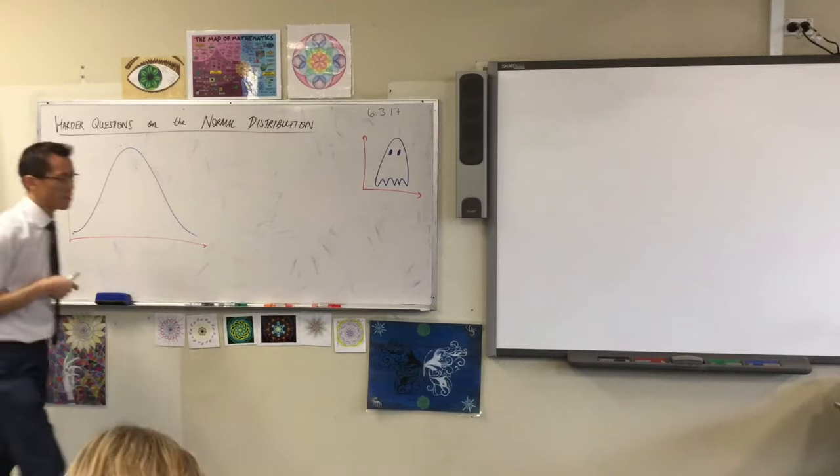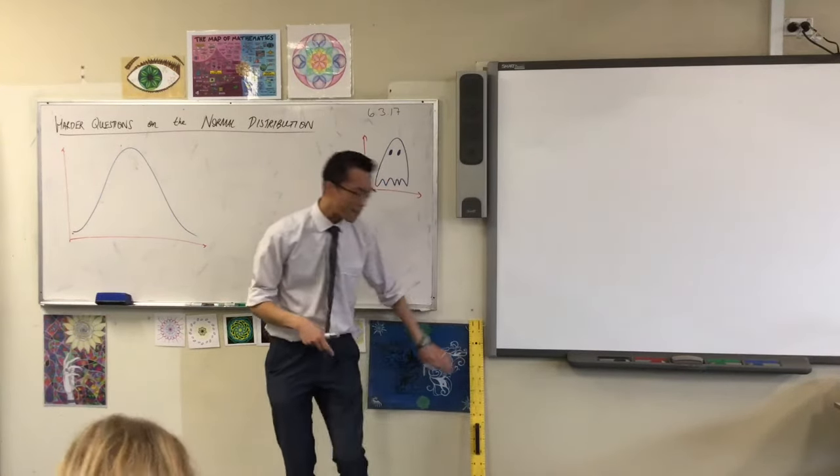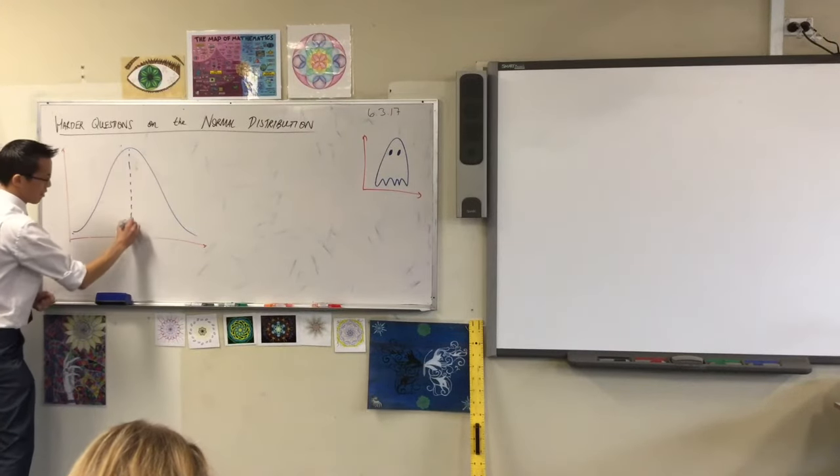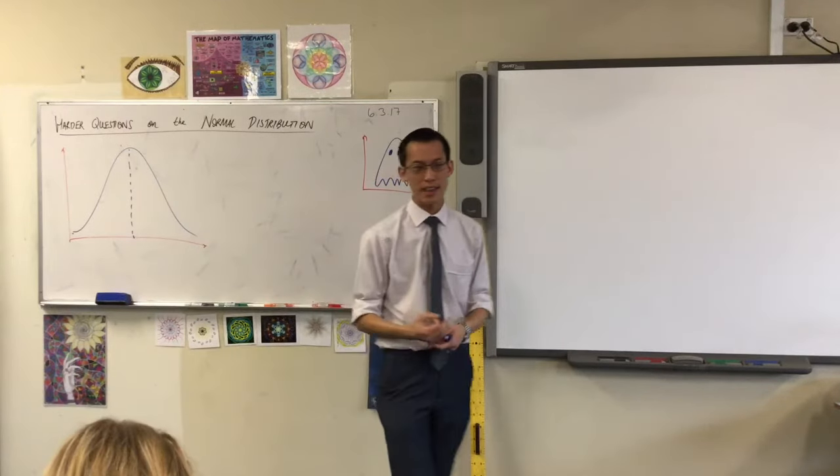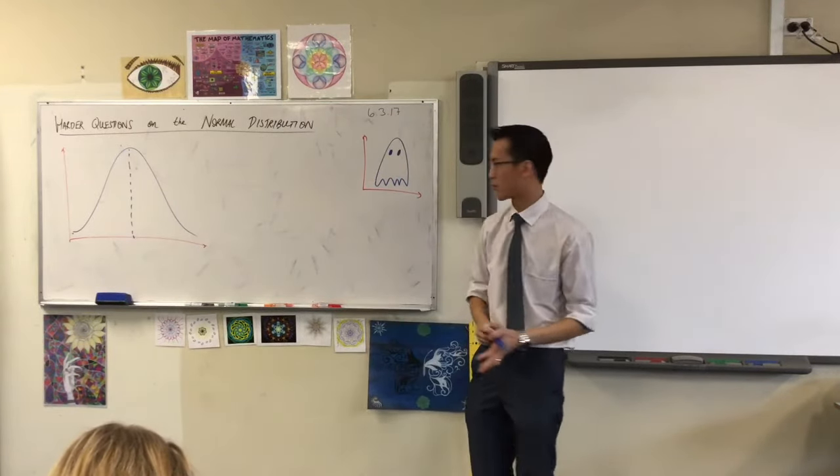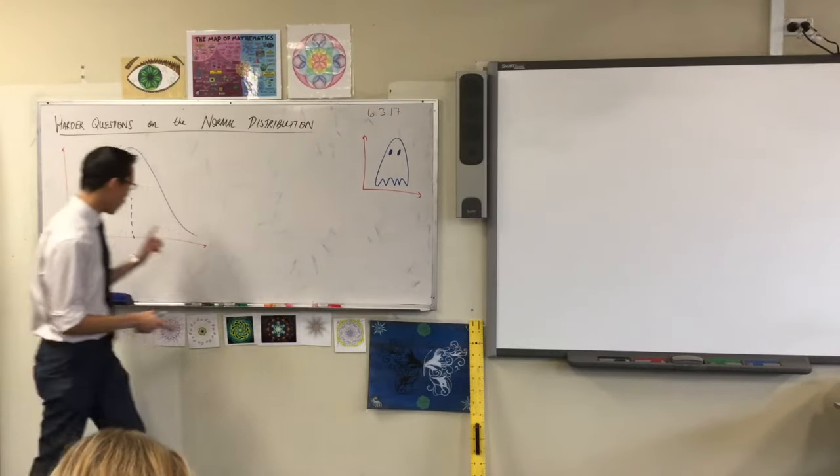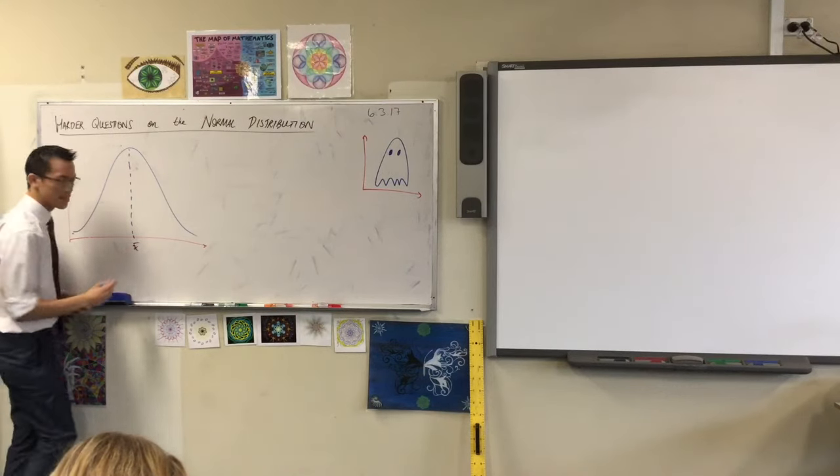So on this normal distribution, the most important part of the graph is right there, smack bang in the middle. Because we know for the normal distribution there are three measures of central tendency, and they're all the same value. What are those three again? Mean, mode, and median. They're all right here on the center, so we'll just mark them all as the mean.